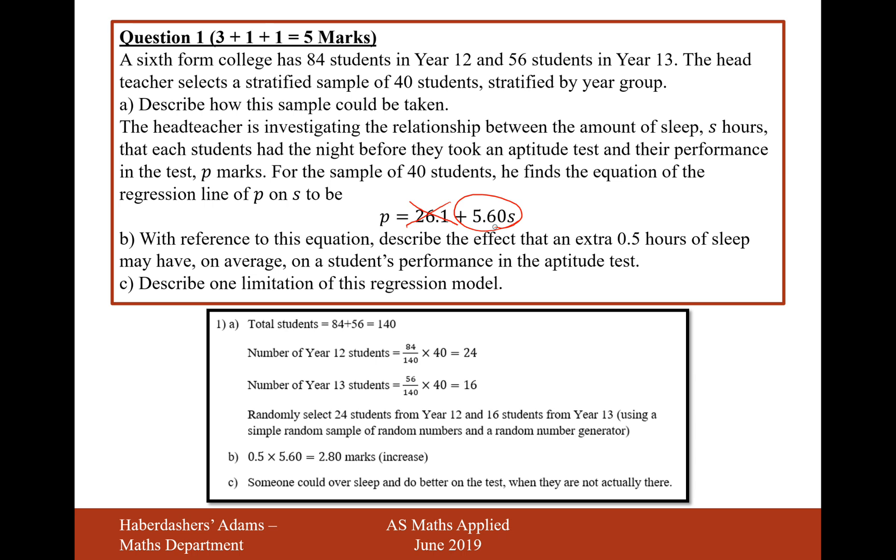Describe one limitation of this regression model, which someone could oversleep and do better on the test when they're actually not there. If they sleep for 14 hours and just completely miss the test altogether, then they've obviously missed the test and will, by the model, get a better mark.